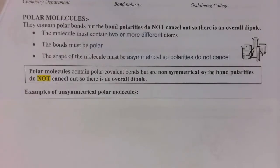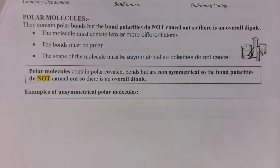Polar molecules on the other hand contain polar bonds but those bond polarities do not cancel out and therefore there is an overall dipole. So to be a polar molecule you've got to have two or more different atoms, the bonds themselves must be polar, and the shape of the molecule must be asymmetric — in other words non-symmetrical. Therefore the bond polarities do not cancel out and there is an overall dipole moment.